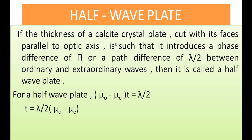This is the crystal plate. A wave plate is named based on its fraction: λ/4 means quarter wave plate, λ/2 means half wave plate. If the thickness of the crystal plate is such that it introduces a phase difference of π, or a path difference of λ/2, then it is called a Half Wave Plate. The formula is: μ₀ − μₑ × t = λ/2, or t = λ / [2(μ₀ − μₑ)].